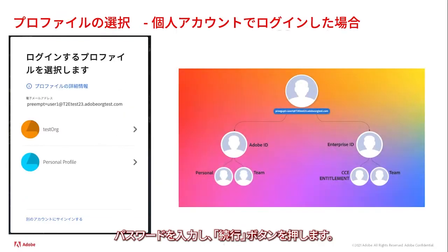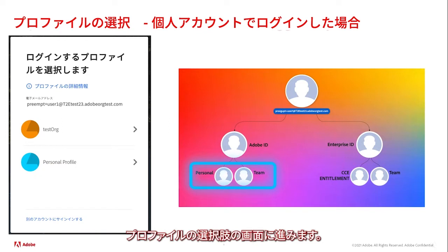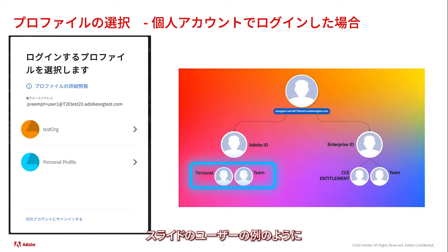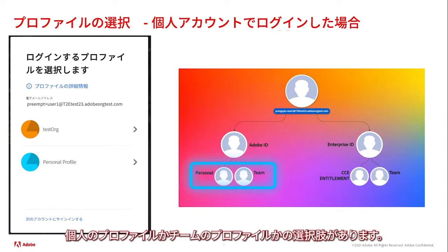After entering their password, the user is presented with a profile selection. In our example, since the user's Adobe ID or personal entitlement has been invited to a team, giving them a team entitlement, they are presented the option to select either their personal profile or their team entitlement, here represented as Test Org.